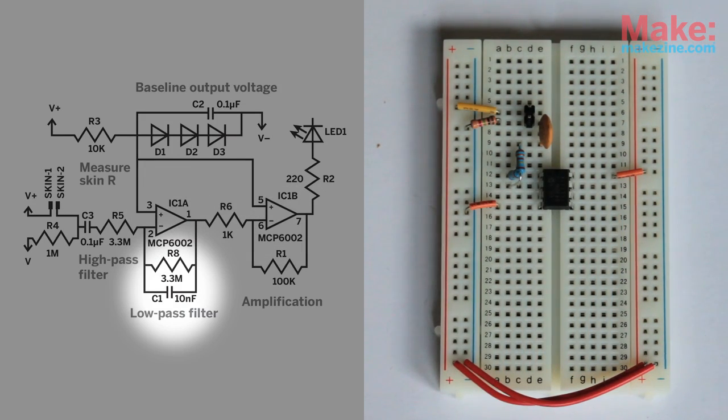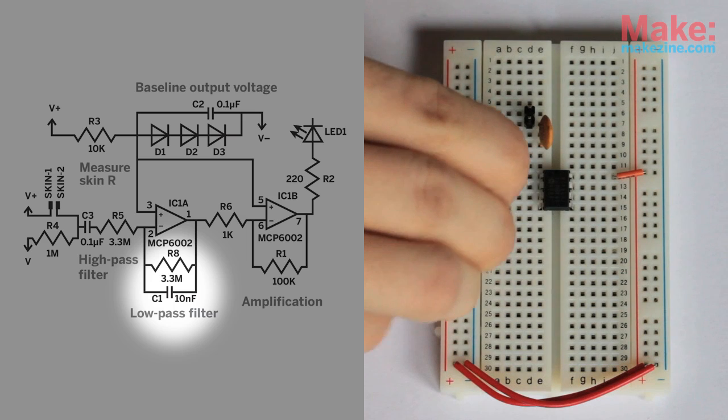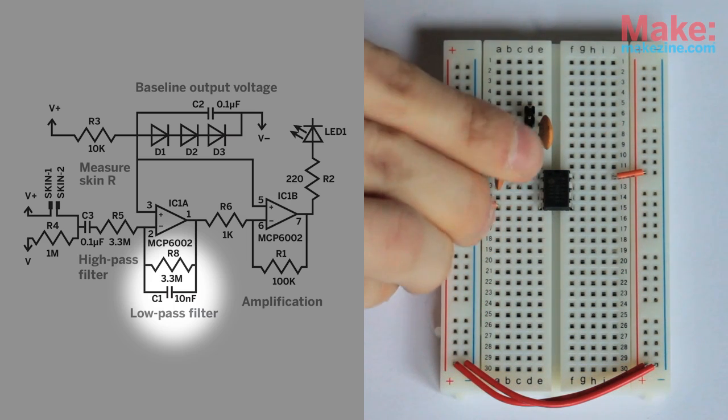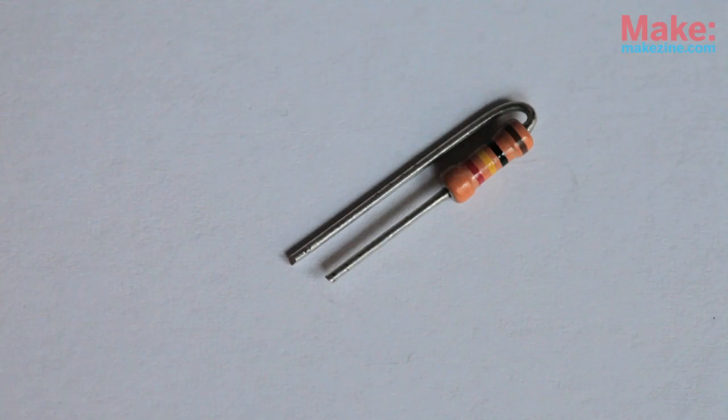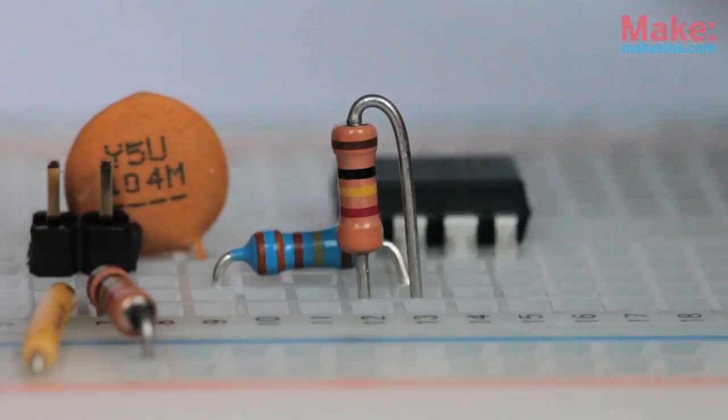Next is the low-pass filter. This will filter out high-frequency noise, such as noise that originates from our 60 Hz power outlets. This is a resistor and a capacitor going in. I bend my resistors this way sometimes to make sure I have enough room.